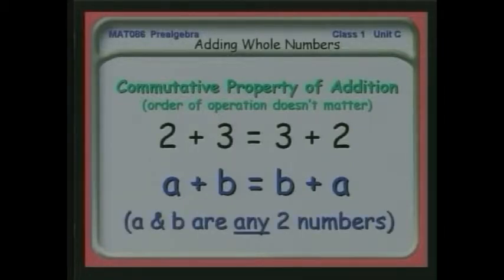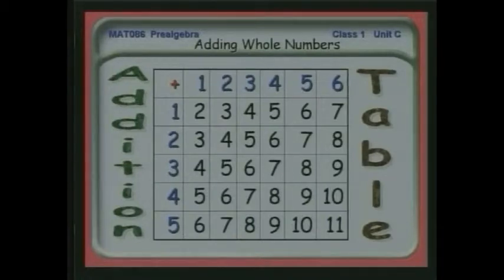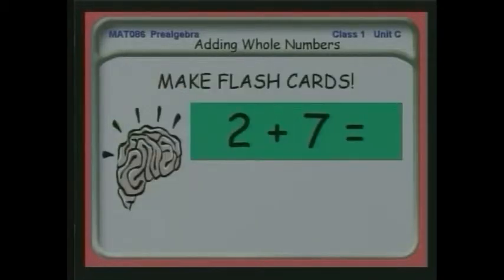One of the things that is going to help you a lot is the addition table. For example, you can look over horizontally and down vertically. So if I go two horizontally, four down vertically, I see it's six. Two plus four is six. It would be very wise for you to memorize the addition table.